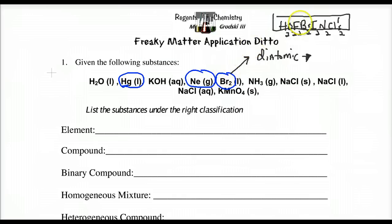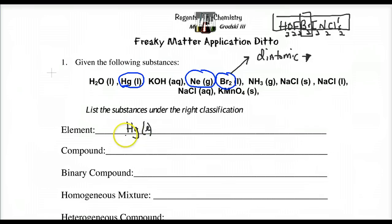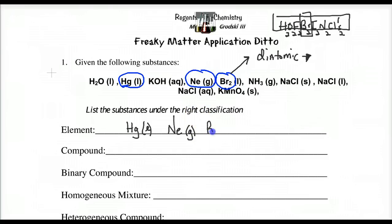And Br2 is of course right here — one of the examples. So for elements: we have mercury in a liquid state, denoted by one capital letter. Then we have neon in the gaseous state. And then we have bromine bonded to itself in liquid state. Those are our elements — notice all one capital letter.